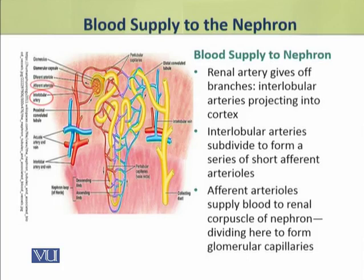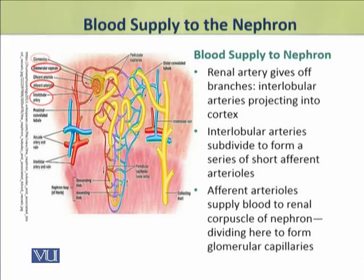These afferent arterioles supply blood to the renal corpuscle of each nephron. In the nephron, they divide further to form a network of glomerular capillaries.